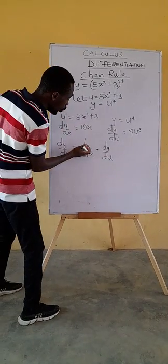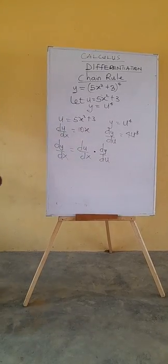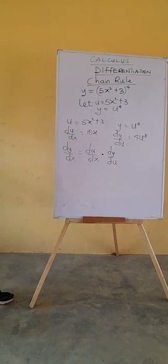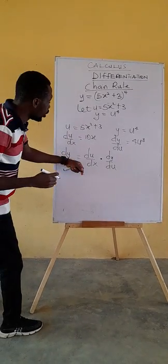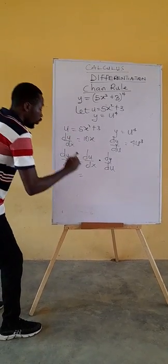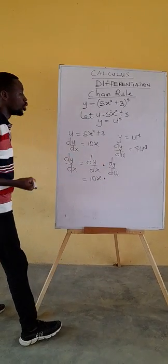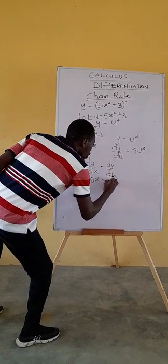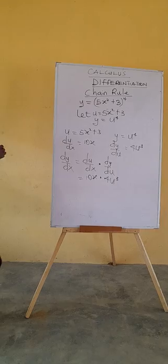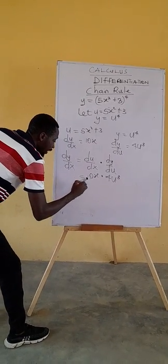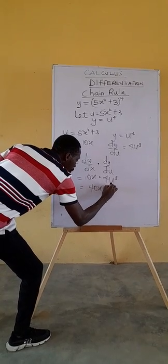That is du/dx times dy/du. Look guys, we end up with dy/dx. That is why the chain rule is very powerful. Now come with me. What is du/dx? du/dx is 10x + 4. And what is dy/du? dy/du is 4u^3. Now multiply this. 4 can multiply 10x + 4, we have 40x + 16. Then u^3.